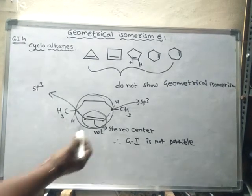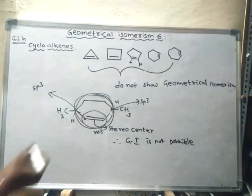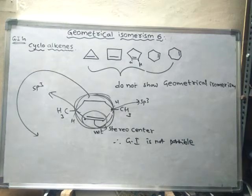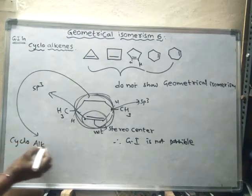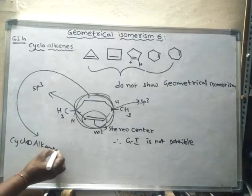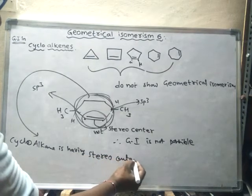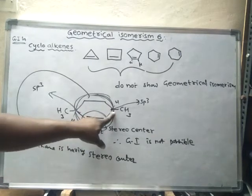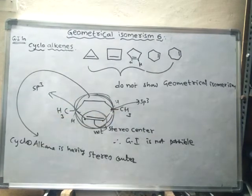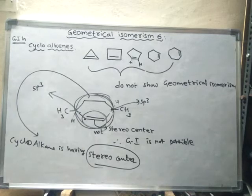The cycloalkane has a stereocenter because both carbons are sp3, there is restricted rotation between them, and they each have different groups attached. Hence, between these two carbons, the center is a stereocenter, and it shows geometrical isomerism.